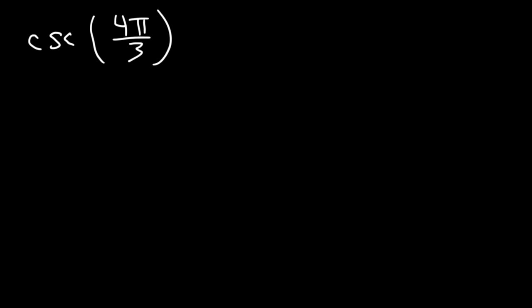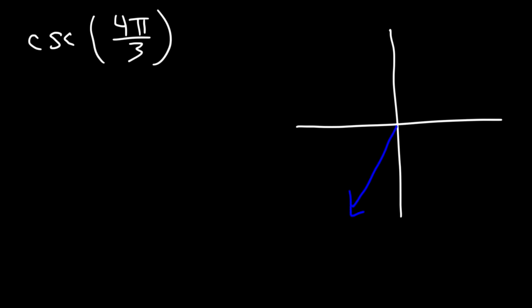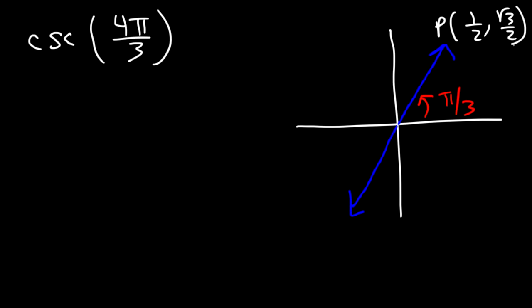Now let's try another example. What is cosecant of 4π divided by 3? Feel free to pause the video and try that. First, let's draw a portion of the unit circle. 4π/3 is in quadrant 3. The reference angle of 4π/3 is π/3, and we know the point corresponding to π/3 is (1/2, √3/2). In quadrant 3, both x and y are negative, so this corresponds to the point (−1/2, −√3/2).